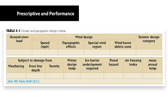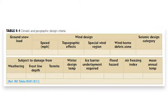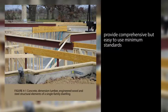When adopting the IRC, the jurisdiction must provide the values for IRC Table R301.2-1, Climatic and Geographic Design Criteria. See Table 4-1 here.